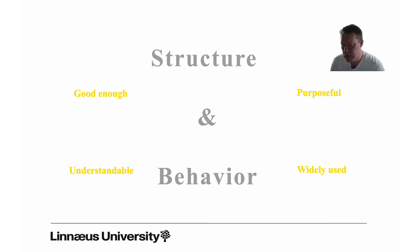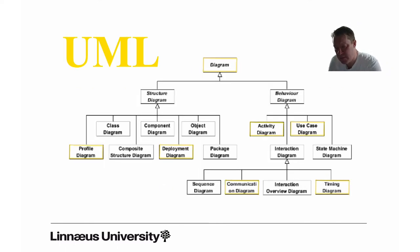UML, the unified modeling language - what you see here is a domain model for UML. We have the diagrams at the top, and you can see there are two types of diagrams in UML: structure and behavioral diagrams. The candidates in UML are many, and it means that it is fairly straightforward to find a purposeful, widely used, good enough, understandable diagram in this family - not always perfect, but good enough.